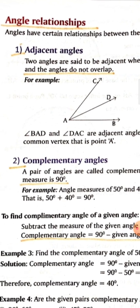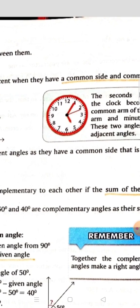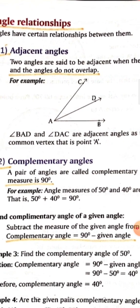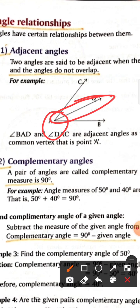The first one is adjacent angles. Two angles are said to be adjacent when they have a common side and a common vertex, and the angles do not overlap. In this figure, there is a common side AD and a common vertex at point A.